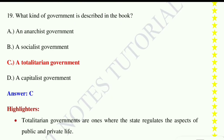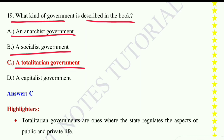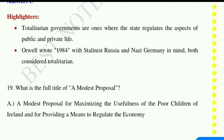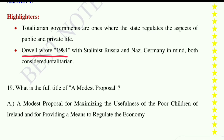Question number nineteen: What kind of government is described in the book? Option A: anarchist, option B: socialist, option C: totalitarian, option D: capitalist. The correct answer is totalitarian government. A totalitarian government is one where the state regulates all aspects of public and private life. Orwell wrote 1984 with Stalinist Russia and Nazi Germany in mind, both considered totalitarian.